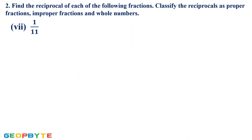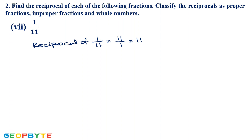Seventh one: 1/11. Reciprocal of 1/11 is 11/1, which is nothing but 11. So here it is a whole number. Whole numbers are a collection of all positive integers including 0. So it is a whole number.